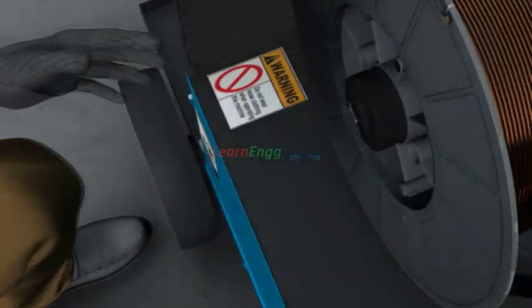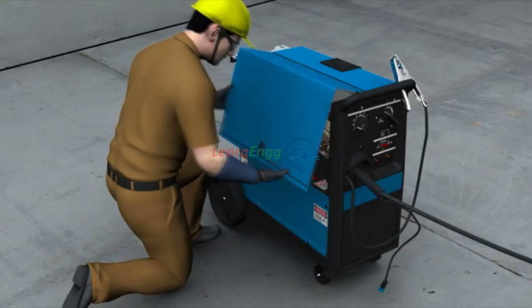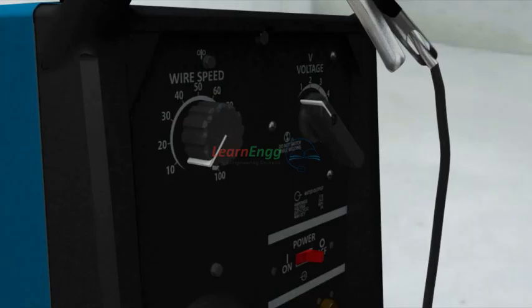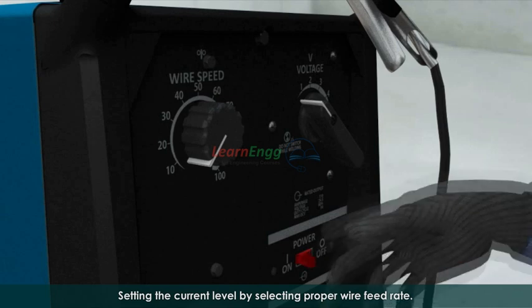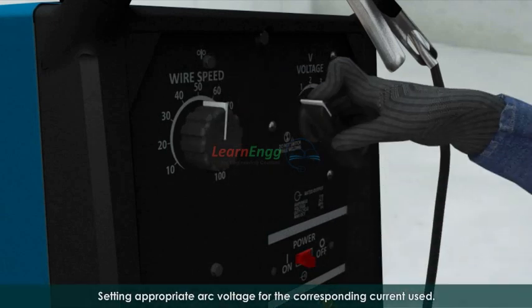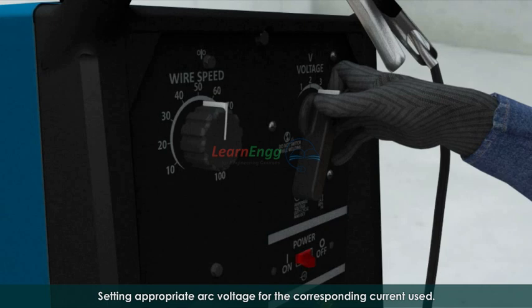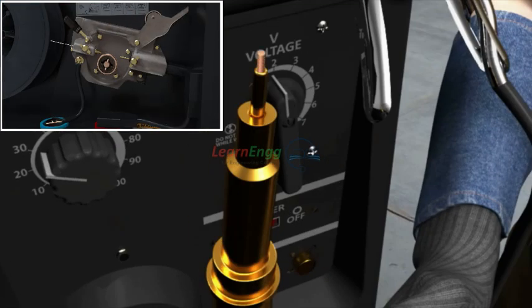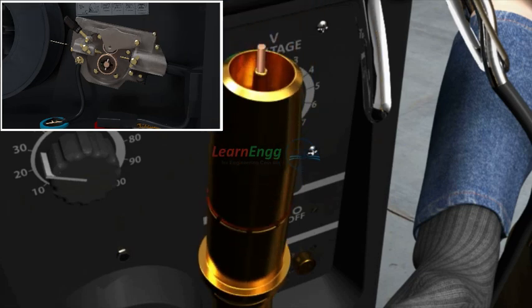Fix the wire spool, setting the current level by selecting proper wire feed rate, setting appropriate arc voltage for the corresponding current used. Take the wire through the guide tube rollers spiral and contact tape at the end of the torch or gun.